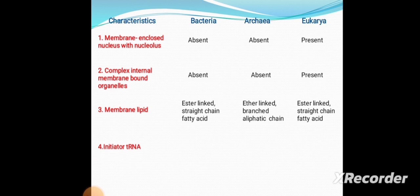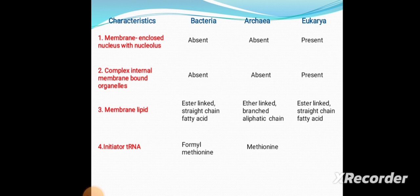Fourth is the initiator tRNA. In Bacteria, the initiator tRNA is formyl-methionine, whereas in Archaea it is methionine, and in Eukaryotes it is also methionine. So Archaea and Eukaryotes share methionine as the initiator tRNA, while Bacteria use formyl-methionine.